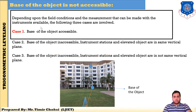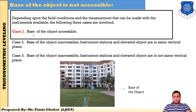So you know that there are three important factors: one is the field condition, measurement, and instrument available. Depending upon these, there are three cases. First case: base of the object is accessible. In this particular session, I have explained case number 1. Case number 2 and case number 3 will be explained in the next session. In this session, I have explained the derivation of case number 1 as well as an example of case number 1.